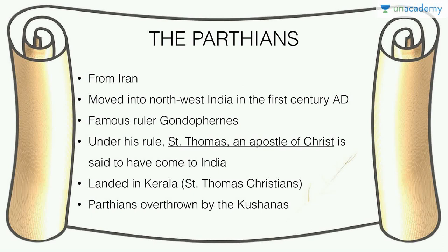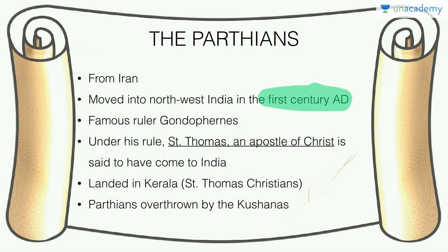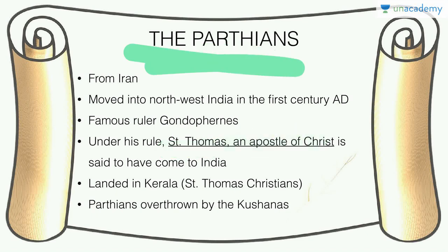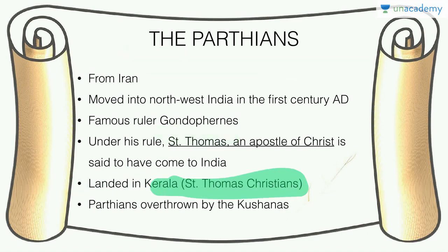The Parthians were from Iran and moved into northwest India in the first century CE. One of their famous rulers was Gondophares. Under his rule, St. Thomas, an apostle of Christ, came to India — landing in Kerala. That is why many Kerala Christians are called St. Thomas Christians. Finally, the Parthians were overthrown by the Kushans.